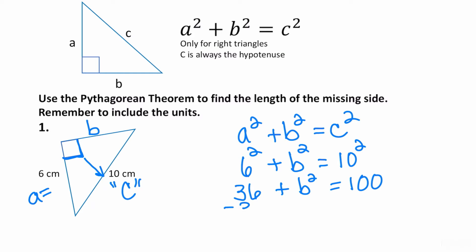36 plus B squared is equal to 100. Now I have to subtract 36 from both sides, leaving me with B squared is equal to 64. I can take the square root of 64, which is equal to 8. That means that the length of the missing side is equal to 8 centimeters.